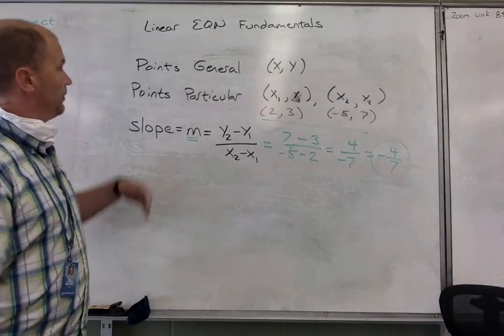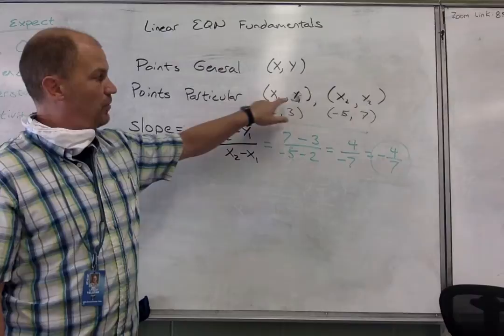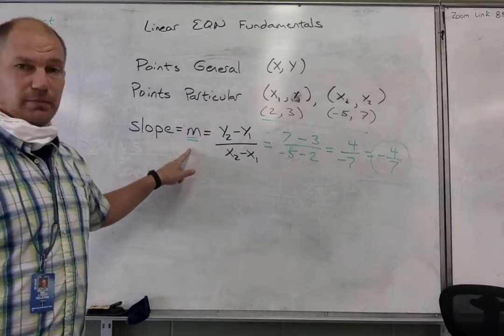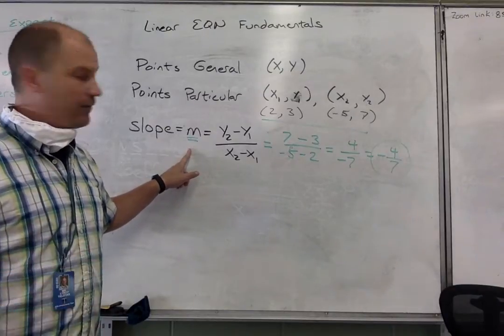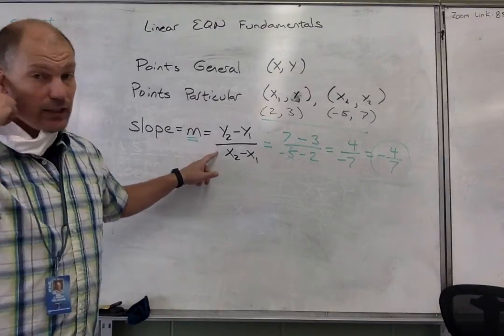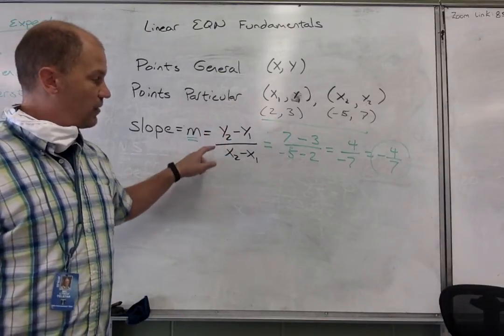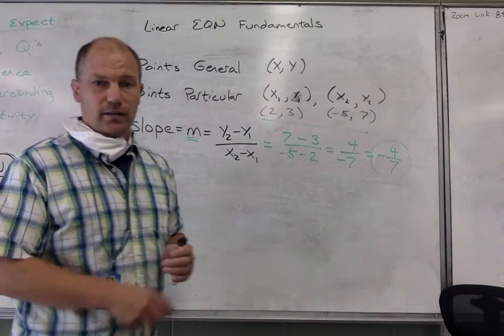So in general, points are labeled x, y. When we're talking about specific points, they have the subscripts. Slope is labeled as m. If you still need to calculate slope because you weren't given it directly, then you need to use this formula, which is the difference of the y's divided by the difference of the x's. Okay, thanks.